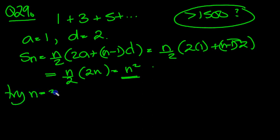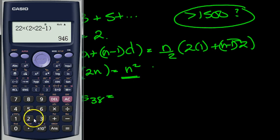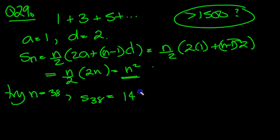Try n equals 38. S38 then. Let's put that in and get 38 squared is all we need to work out. So 38 squared equals 1444, which is not what we wanted. So let's try 39.